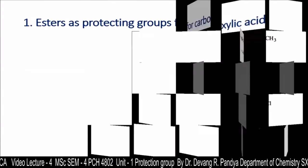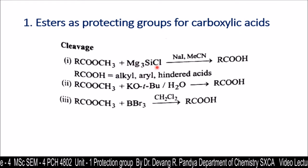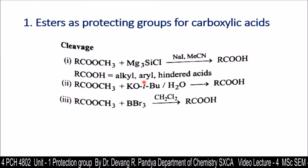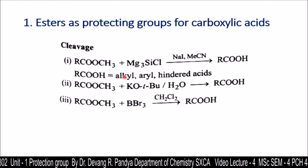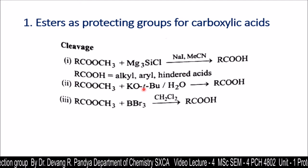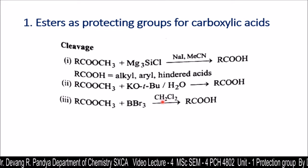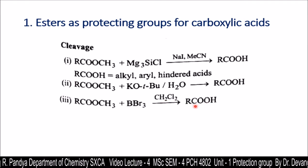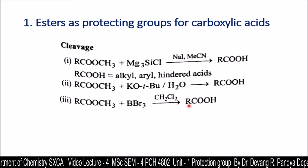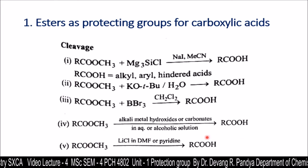The deprotection takes place in the following fashion. Methyl ester treated with magnesium chloride in the presence of sodium iodide and acetonitrile gives back the carboxylic group. The substituent R can be alkyl, aryl, or a hindered acid. Methyl ester treated with boron tribromide in the presence of dichloromethane also gives back the carboxylic group. These are further examples of methyl ester being converted back to the carboxylic group.